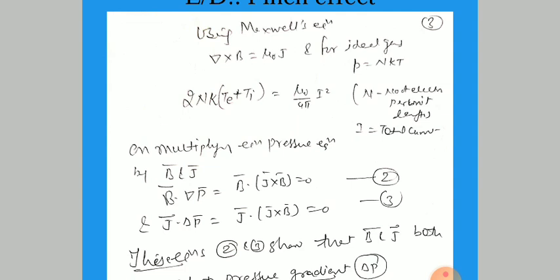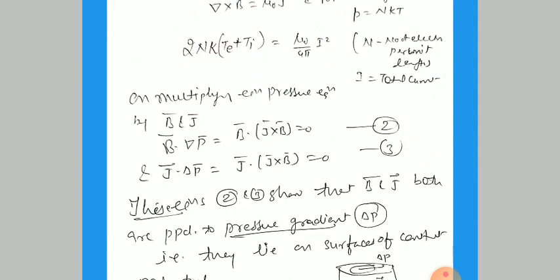From the equations we can write B · ∇P = 0, because ∇P = J × B, so the dot product gives cos 90° = 0. This shows that B is perpendicular to ∇P. Similarly, J · ∇P = J · (J × B) = 0, because J × B is perpendicular to J, so cos 90° = 0 again. This shows that both J and B are perpendicular to the pressure gradient ∇P.